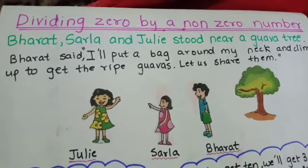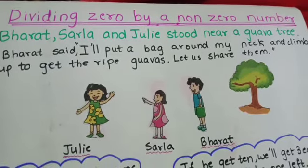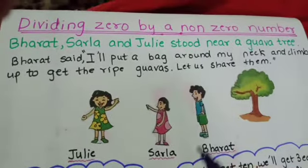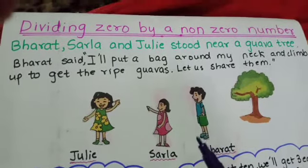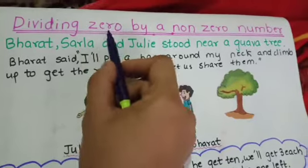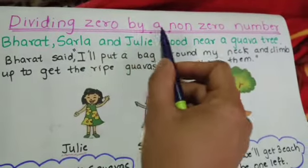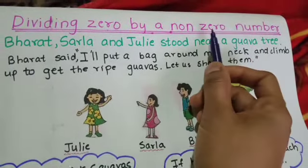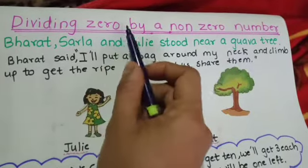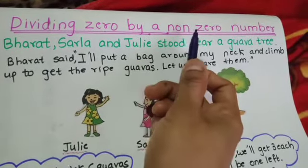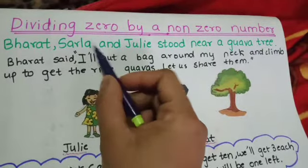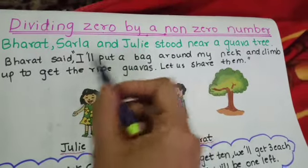Students, in our previous video we had seen how division can be done by arranging the numbers vertically. Today we will see dividing 0 by a non-zero number — that is, if we divide 0 by a non-zero number, what will happen? Let us see this through an example.